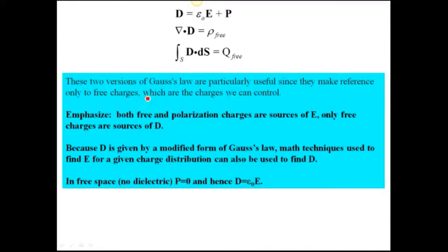Sometimes you can think of it this way: the free charges are really the only ones we can control by, for example, applying voltages, putting charge on a sphere, that kind of thing. Both free and polarization charges are sources of E. Only free charges are sources of D.